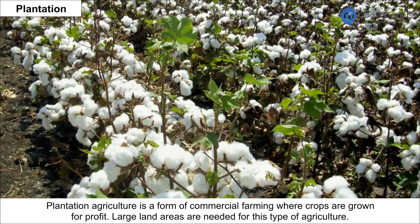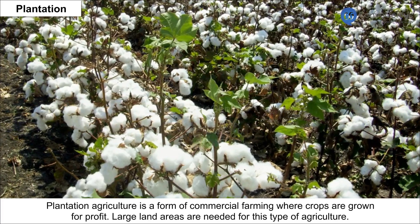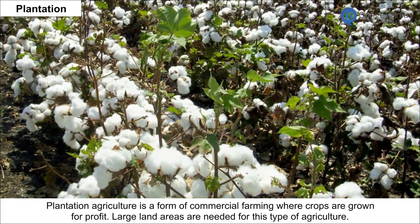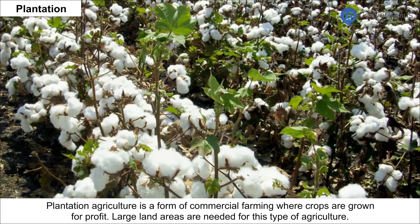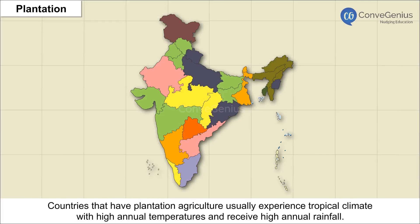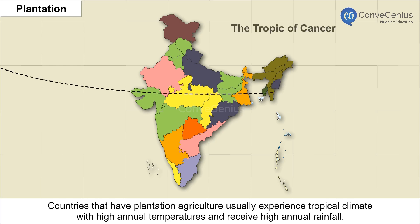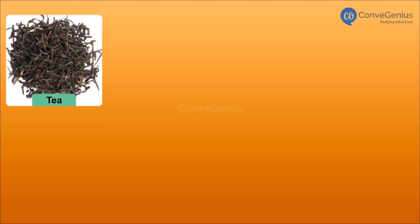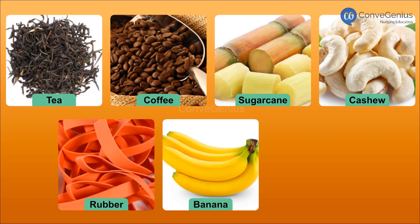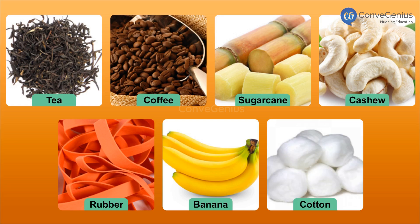Plantation agriculture is a form of commercial farming where crops are grown for profit. Large land areas are needed, and countries with plantation agriculture usually experience a tropical climate with high annual temperatures and high annual rainfall. Crops such as tea, coffee, sugar cane, cashew, rubber, banana and cotton are grown.